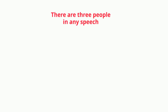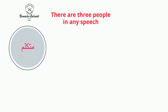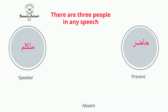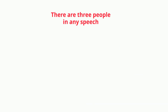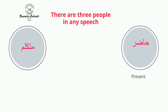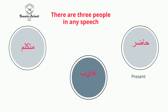In any speech there are three people: there is a speaker, a person being spoken to, and a person being spoken about. The speaker in Arabic is known as mutakallim. The person being spoken to is obviously present, so he is the hadir. The person who is being spoken about is the vaib.